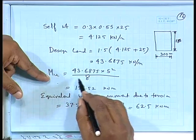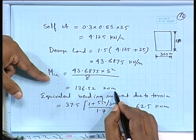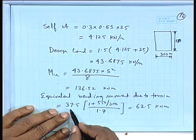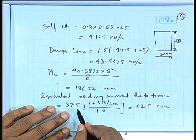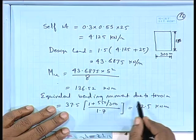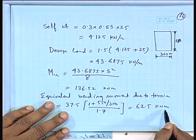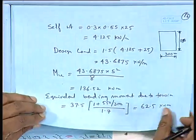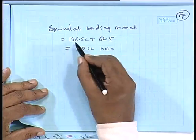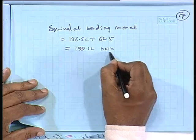The ultimate moment due to the simply supported beam is 136.52 kN·m. The factored torsion is 37.5 kN·m (25 × 1.5), and the equivalent bending moment due to torsion using the codal provision is 62.5 kN·m. The combined equivalent bending moment is 199.02 kN·m.